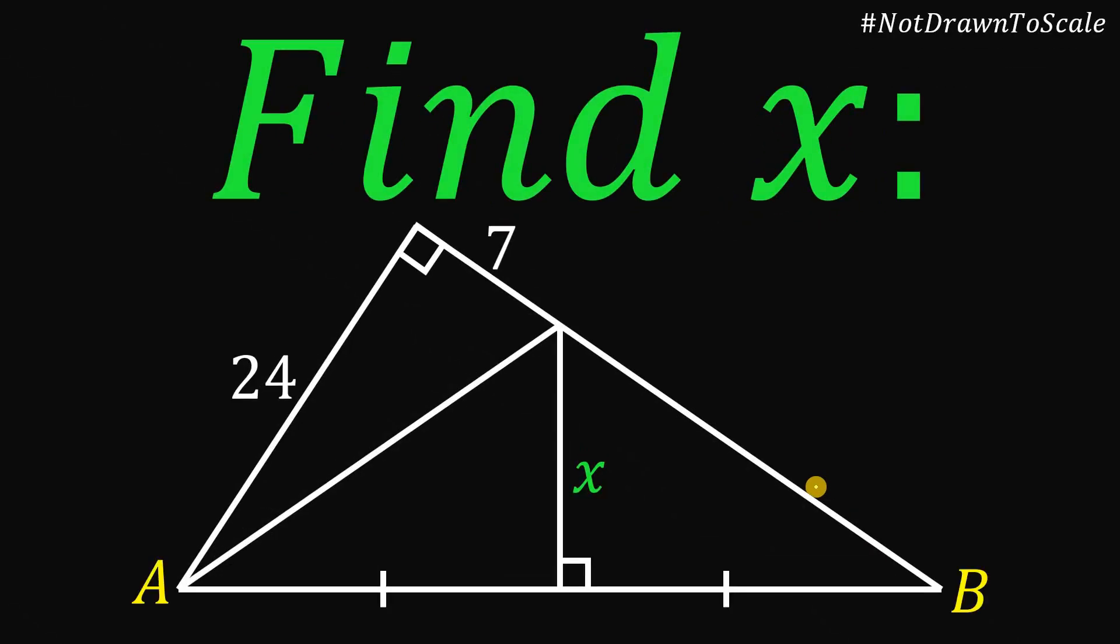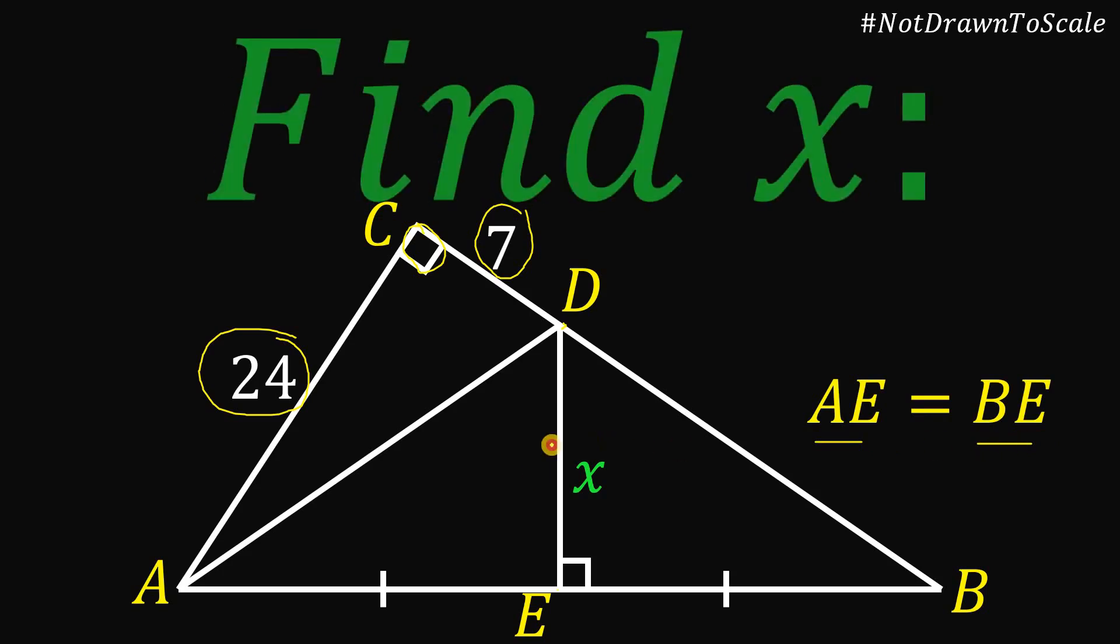Given this right triangle ABC, wherein angle C is 90 degrees, and this point, let's call this as D, and this point is E. Segment CD measures 7 units, and segment AC measures 24 units. Also, take note that side length AE and BE are equal. The question is, find the value of X, this segment X, or DE.